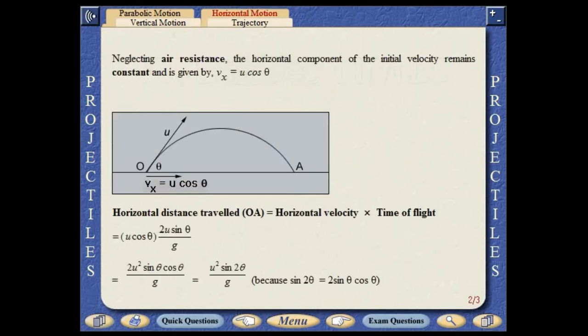If the air resistance is ignored, the horizontal component of the initial velocity remains constant. The horizontal distance travelled equals the horizontal velocity multiplied by the time of the flight.